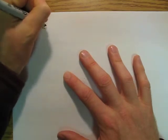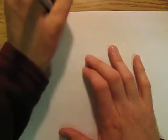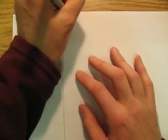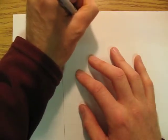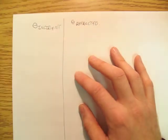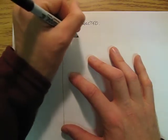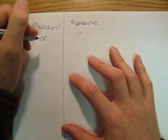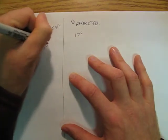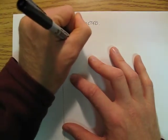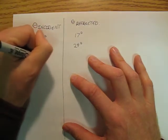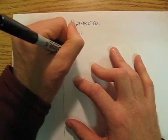We're going to make a nice little data table where we're going to say theta incident and we have theta refracted. So we have 28 degrees goes with 17 degrees. We have 37 degrees goes with 24 degrees. And we have 56 degrees goes with 31 degrees.